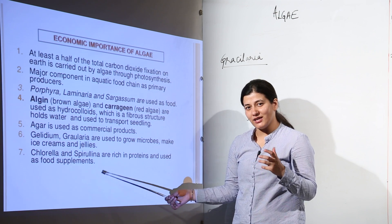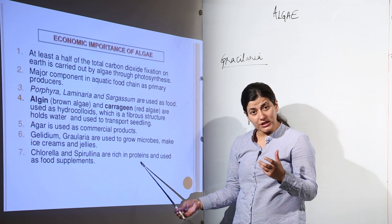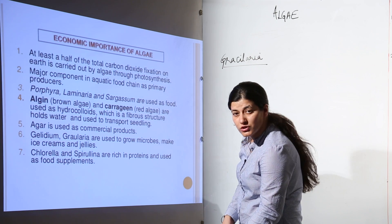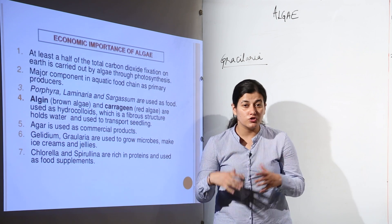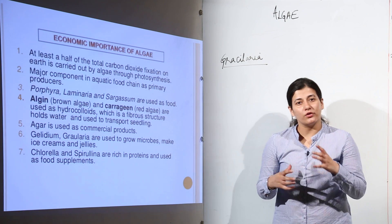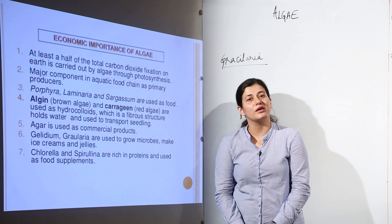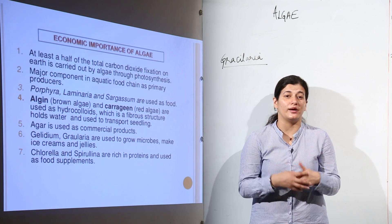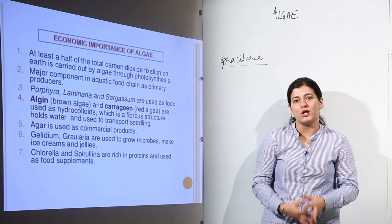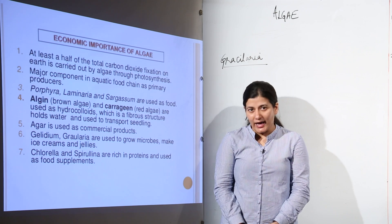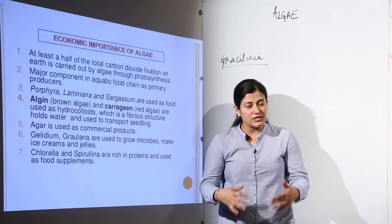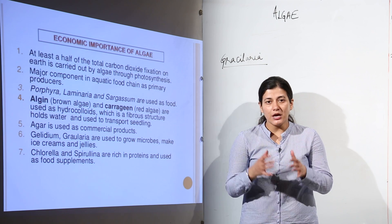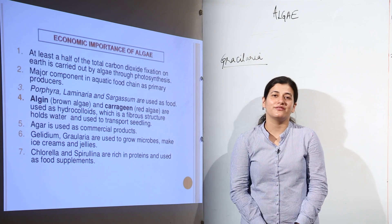Chlorella and Spirulina are green algae which are rich in proteins and are used as food supplements. Astronauts who go to space take these tablets because they are so rich in nutrients. Algae have great ecological importance as well. This concludes the study of algae under the plant kingdom; next we study bryophytes, which are a little more advanced than algae.